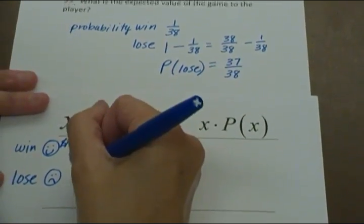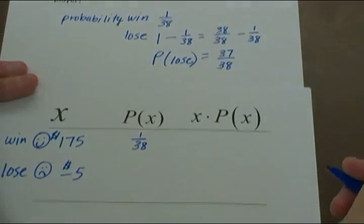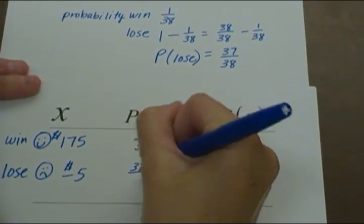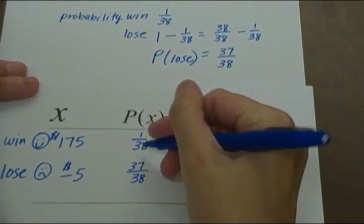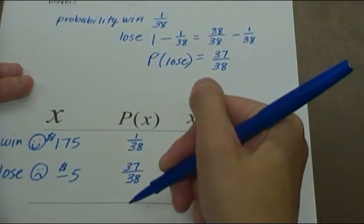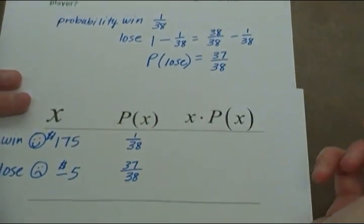Now in math, to show a loss, it's a negative. So we're going to lose $5. The probability of that happening is 37 over 38. The probabilities must equal 1. So if you add these together, it's equal to 1. And that's how you can check to make sure you have these right.